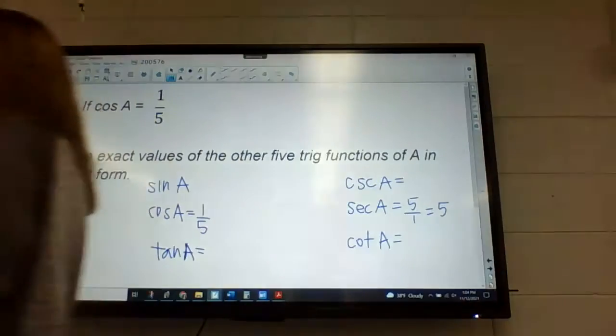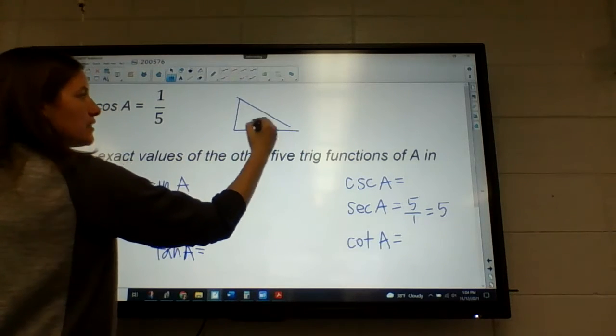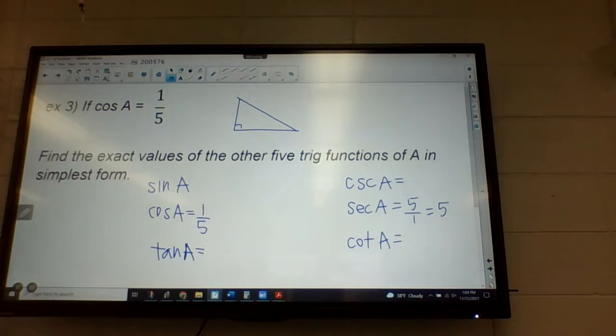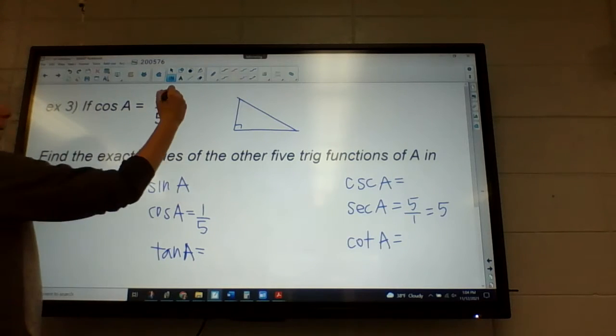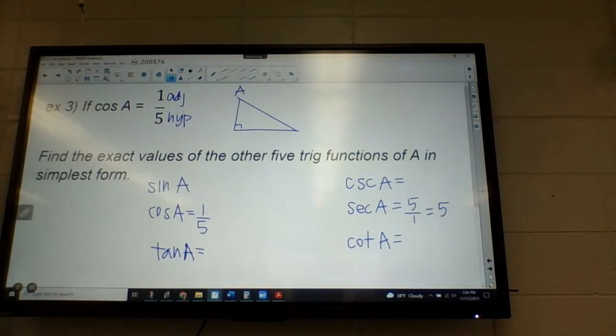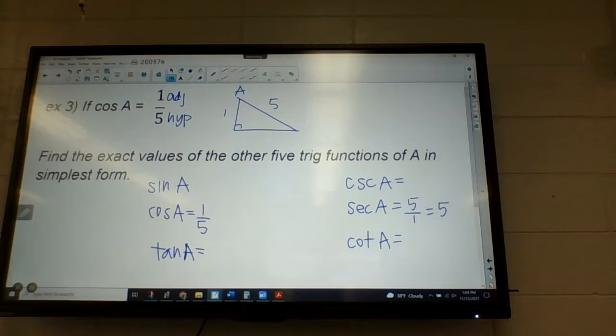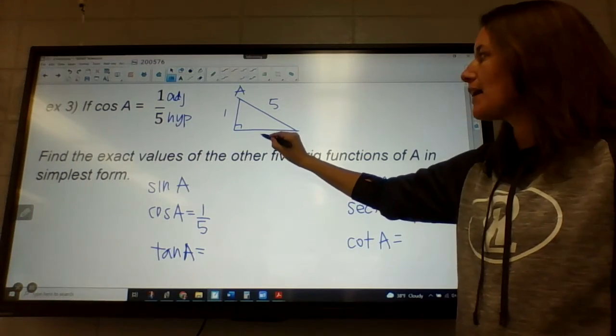So that one's easy, but now we still have four more to do. So drawing the triangle is probably going to be helpful in this case, where I'm just going to sketch a right triangle. You don't have to have a perfect drawing. It's got to be right, obviously. But our cosine told us which two sides: adjacent and hypotenuse. So I'm going to call this angle A. So they've told me one and five. Am I able to find the other side? Yeah, because it's a right triangle, and I knew it was a right triangle because I used cosine. You can only use sine, cosine, and tangent on right triangles. We can then figure out this side because of Pythagorean theorem.